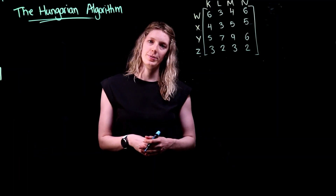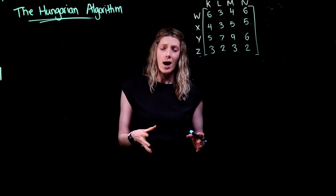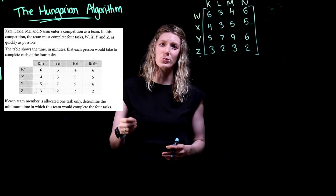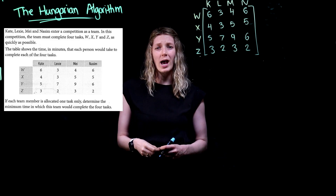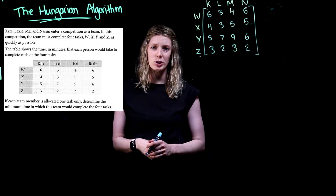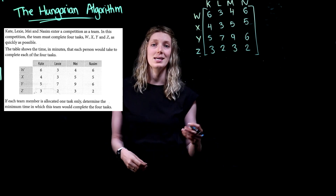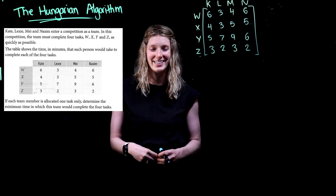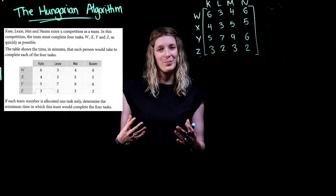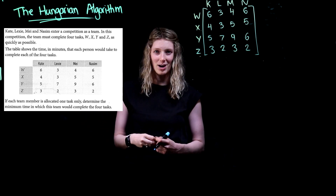In this video we are going to be exploring the Hungarian algorithm. The Hungarian algorithm is used when we are working with allocation problems such as this one here, whereby we have multiple people that can complete multiple tasks. However, we want to make sure that the task is completed in a way that it has minimal cost or minimal time taken to complete. So if we're looking at this example here up on the board, we can see that we have four people that can complete four different tasks.